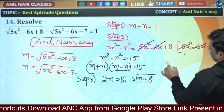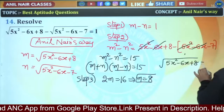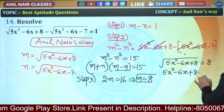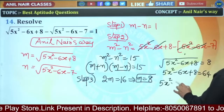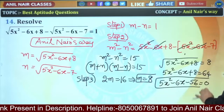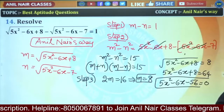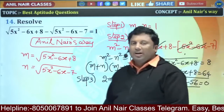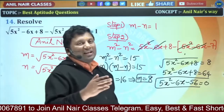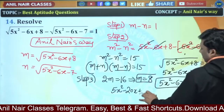Since m = 8, √(5x²-6x+8) = 8. Squaring both sides: 5x²-6x+8 = 64, so 5x²-6x-56 = 0. Using the factor method: 5×56 = 280. Factors of 280 that give a difference of 6 are 20 and 14. So we split: -20x + 14x.